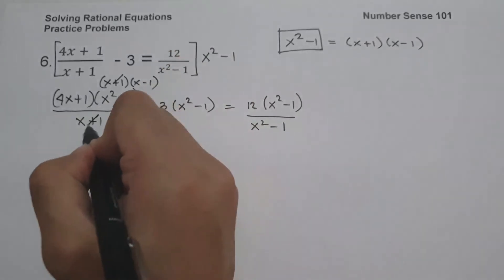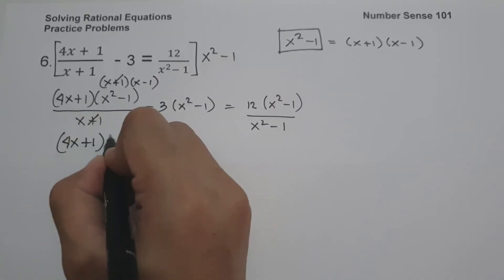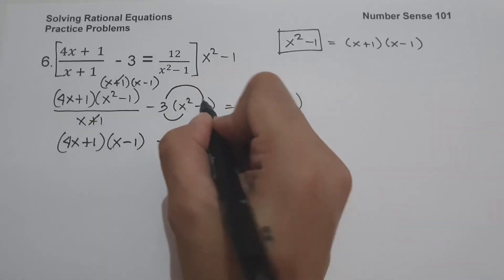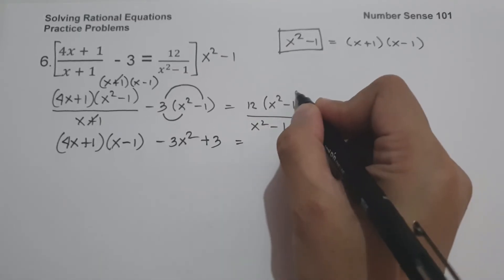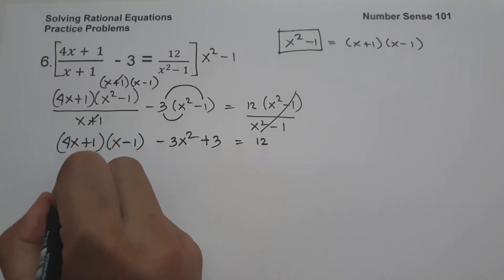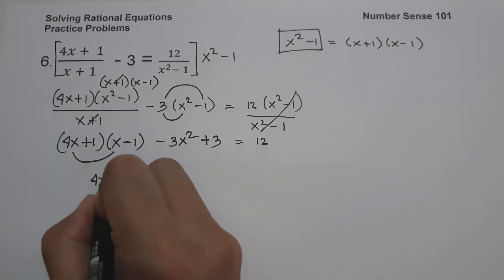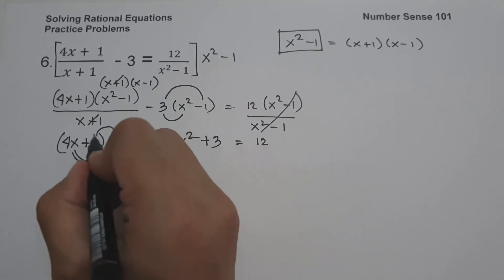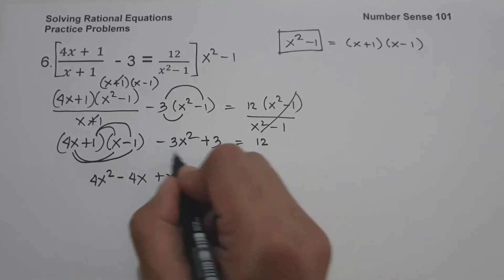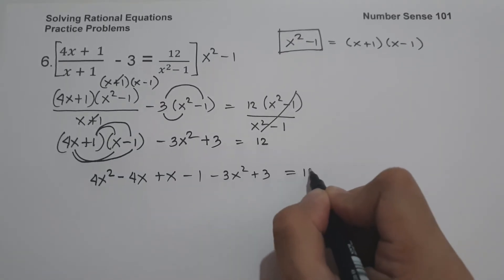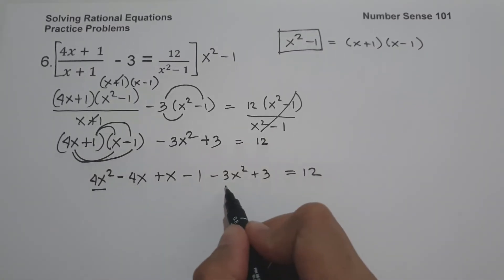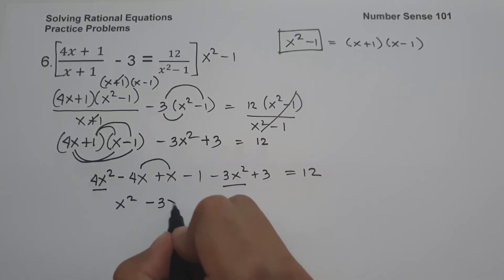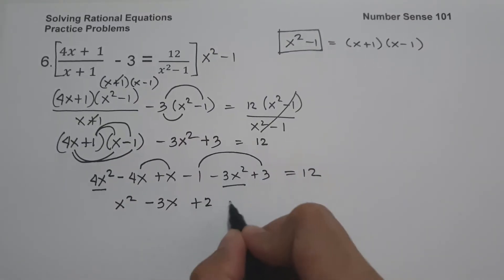Since x squared minus 1 is x plus 1 times x minus 1, we can cancel x plus 1. This gives us 4x plus 1 multiplied by x minus 1, and negative 3 times x squared is negative 3x squared, and negative 3 times negative 1 is positive 3, and we cancel to get 12 on the right. Using the FOIL method: 4x times x is 4x squared, 4x times negative 1 is negative 4x, 1 times x is x, and 1 times negative 1 is negative 1.